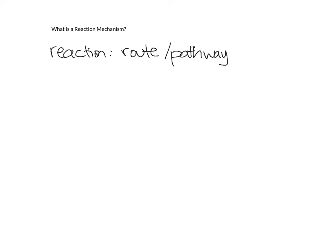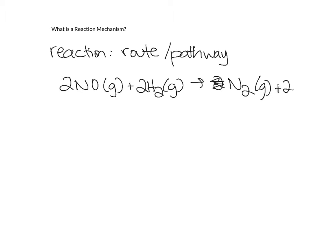So here's an example of a chemical reaction. I can take two gaseous nitrogen monoxide molecules and react them with two H2 gas molecules to make N2 gas and two waters. This particular thing here is what we call an overall reaction. This reaction shows all the products making all of the reactants.